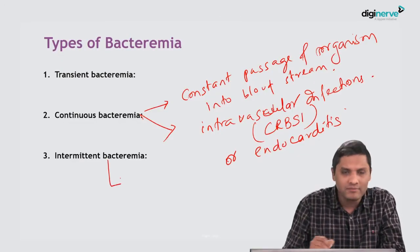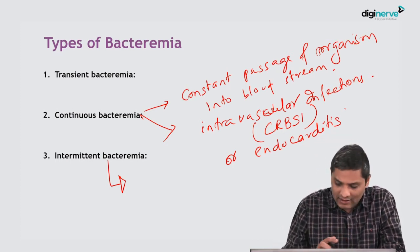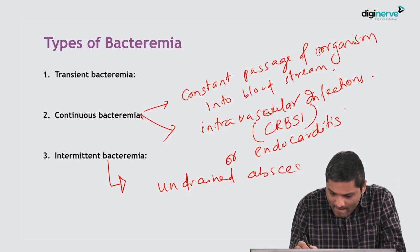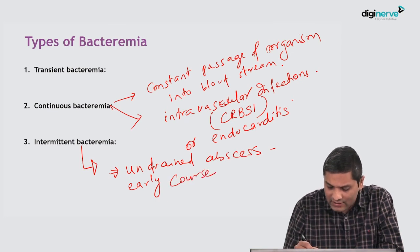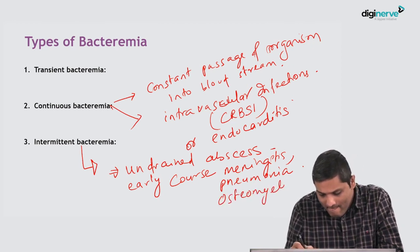The third variety is Intermittent Bacteremia, where the organism spills over to the blood only intermittently. The classical example is an undrained abscess — from the abscess, the organism will spill over to the blood intermittently. Intermittent Bacteremia may also take place in the early course of various infections such as meningitis, pneumonia, and osteomyelitis, where the organism comes to blood only intermittently.